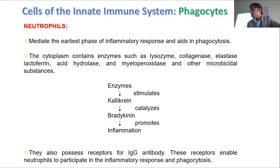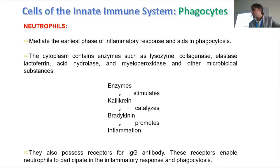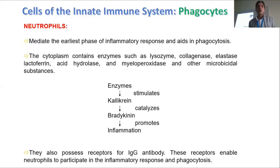To support phagocytosis during inflammation, neutrophils try to contribute and get involved in phagocytosis. They are cells which can eat bacteria and other pathogens at that place.